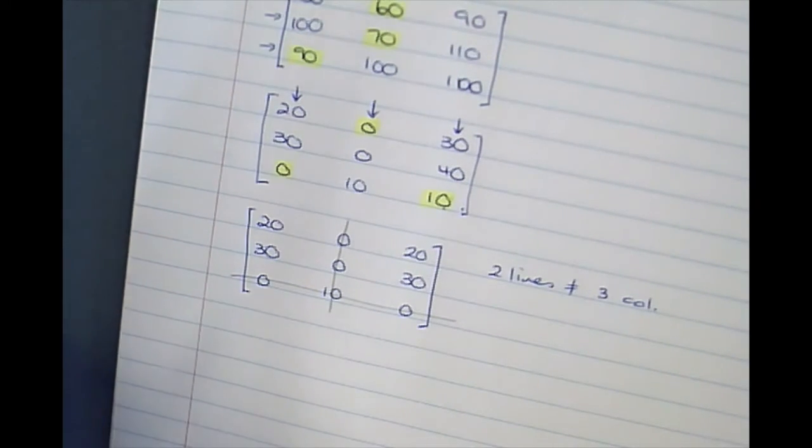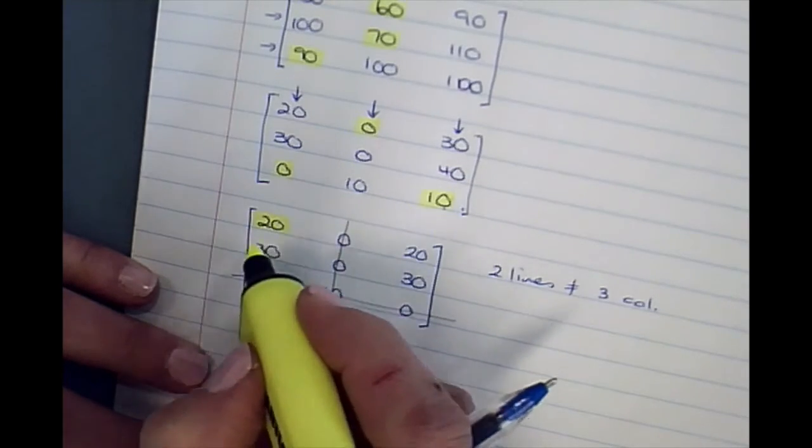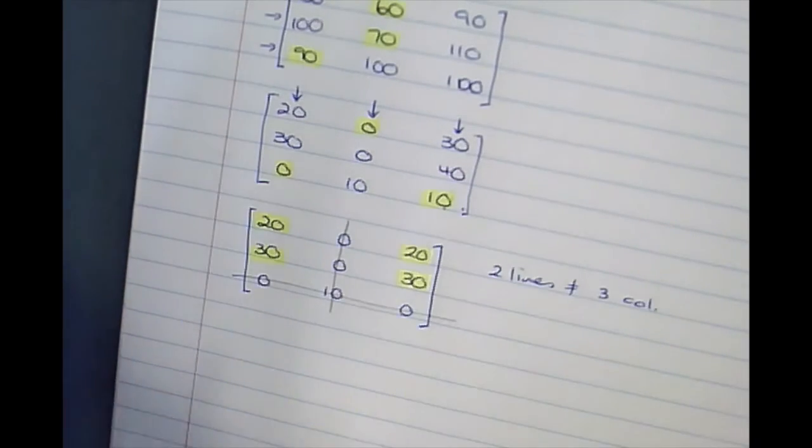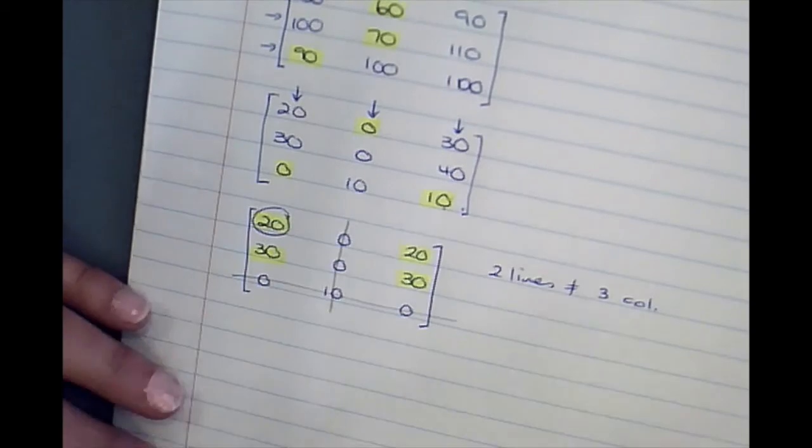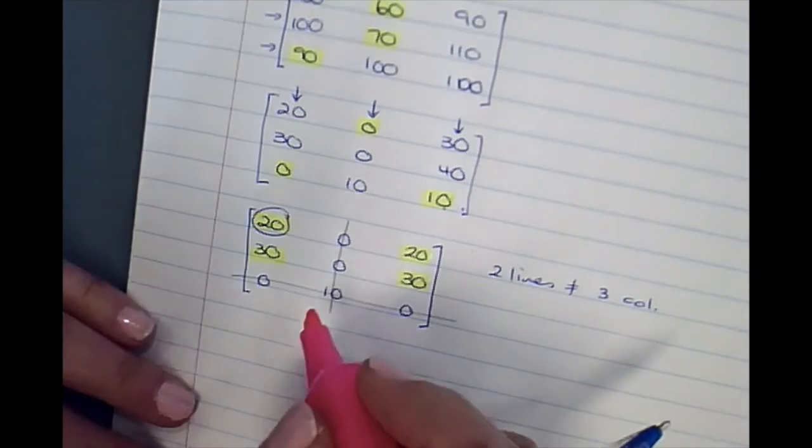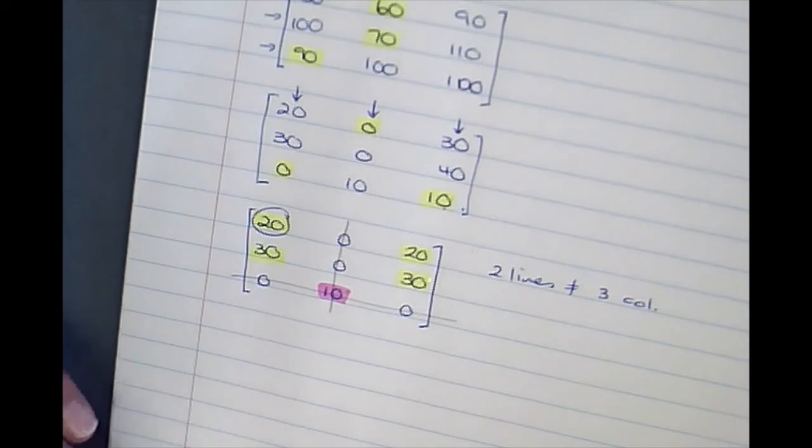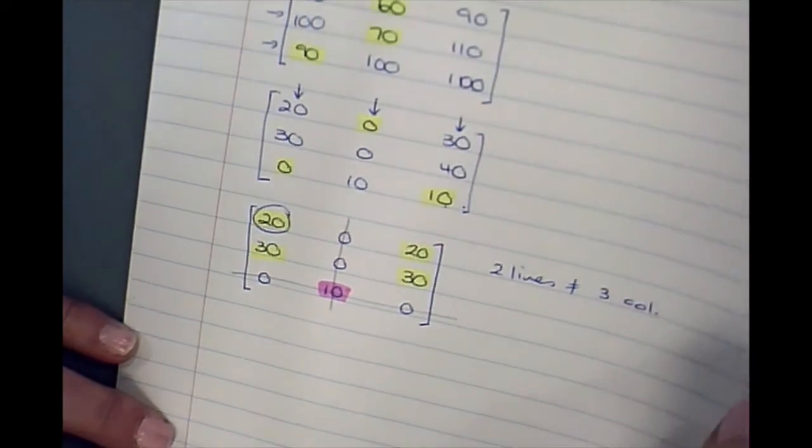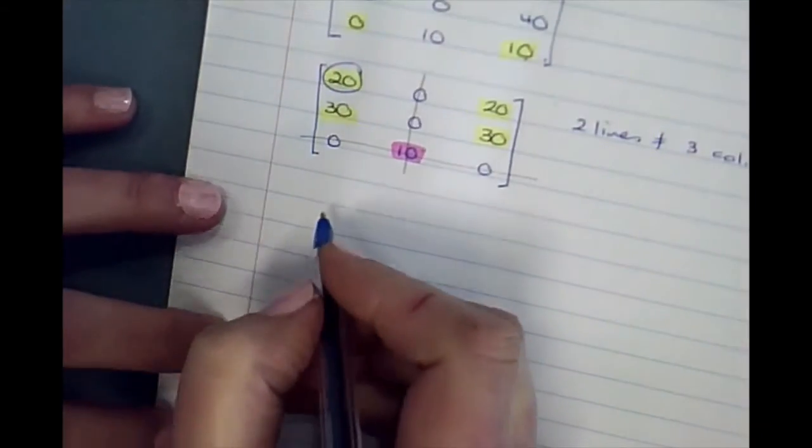We need to find the smallest number not under a line, so that will be 20. We're going to subtract it from the yellows and add it to the pink where the lines cross, so we're going to subtract.